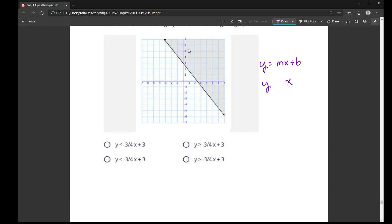Now the shading on this graph is above the line. So that means that y has to be greater than this boundary line, or greater than the remainder of the equation.